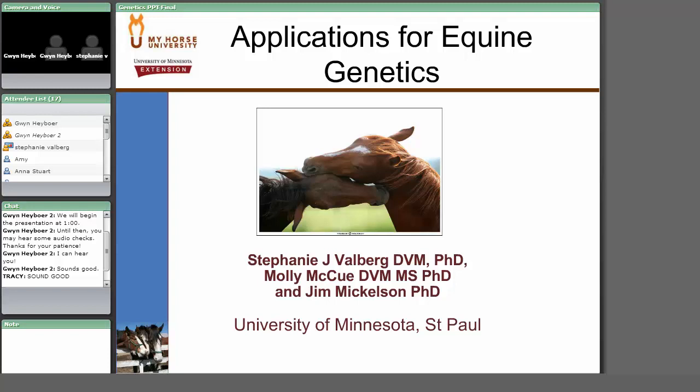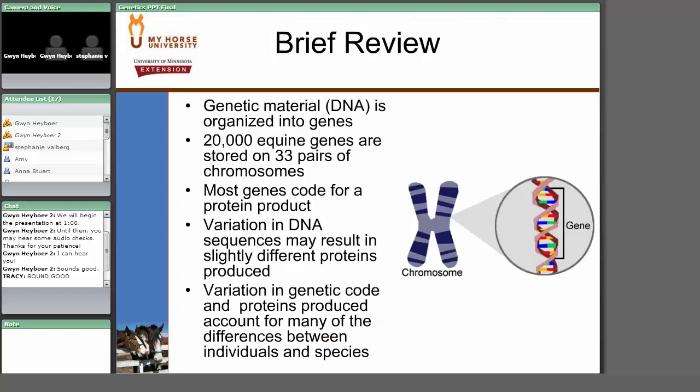Just a brief review to begin with: as you probably know from watching forensic science, there is a concentration of genetic material, DNA, which is organized on chromosomes in the form of genes. In the horse, there are about 20,000 equine genes spread out on 33 pairs of chromosomes, and there are also sex chromosomes — XX or XY — depending on being female or male.